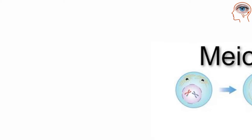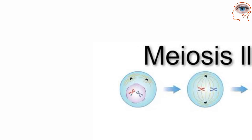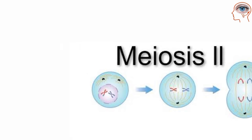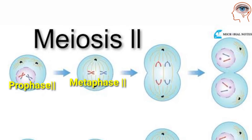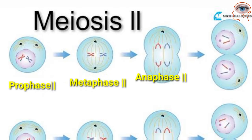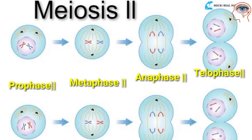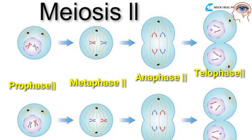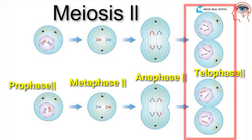Meiosis 2 is similar to mitosis, involving prophase 2, metaphase 2, anaphase 2, and telophase 2, and produces a total of four daughter cells.